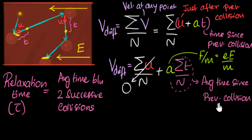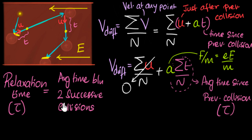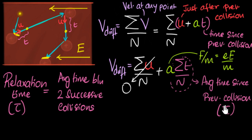Now here comes the trickiest part of the derivation. It turns out that this value — the average time since the previous collision — is exactly the same as the relaxation time tau. There's no simple intuitive way to see this; it requires rigorous mathematics which we won't do here, and we can explore it in a future video. For now, just accept that this value also equals tau.